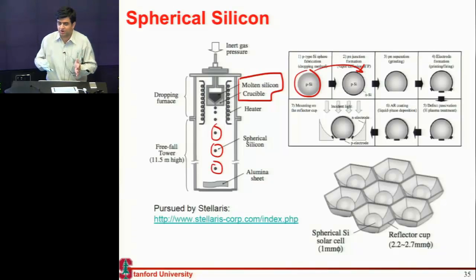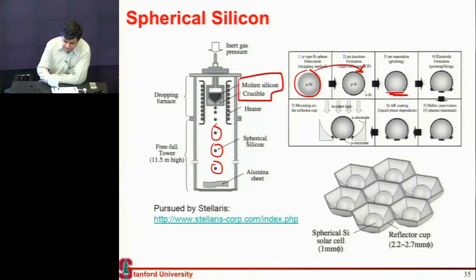You essentially take these balls, place them in a diffusion furnace, you form this PN junction. And then you chop off these balls, so you get this P-type contact over here and make these PNN contacts. You chop off that one region. And hey, I have a solar cell.